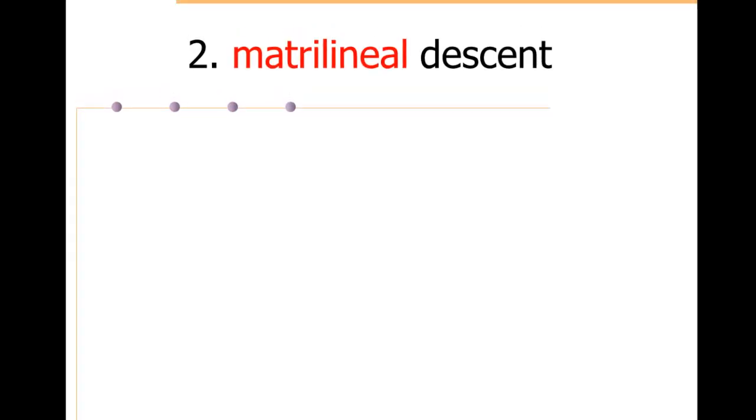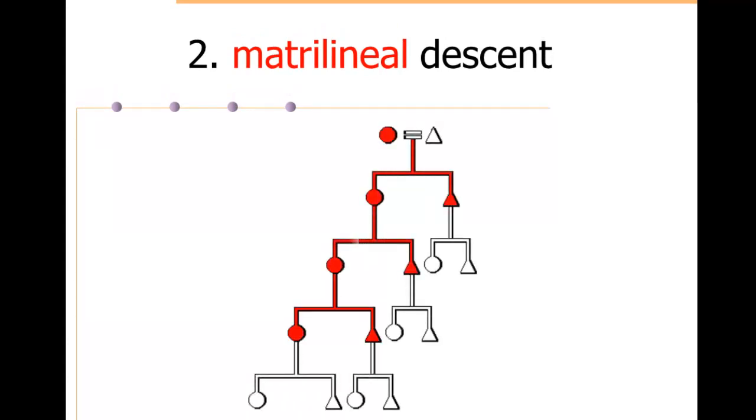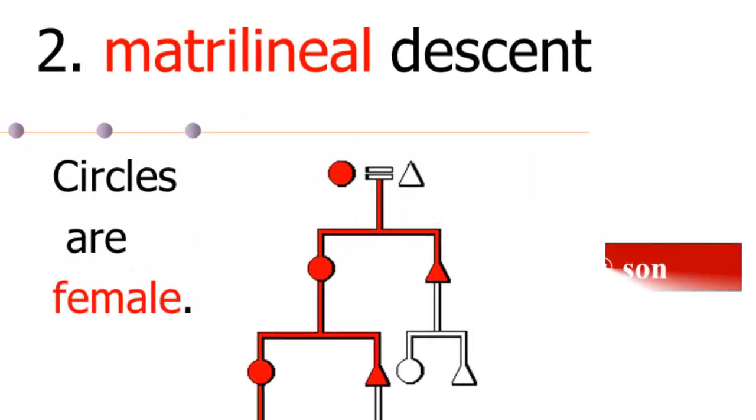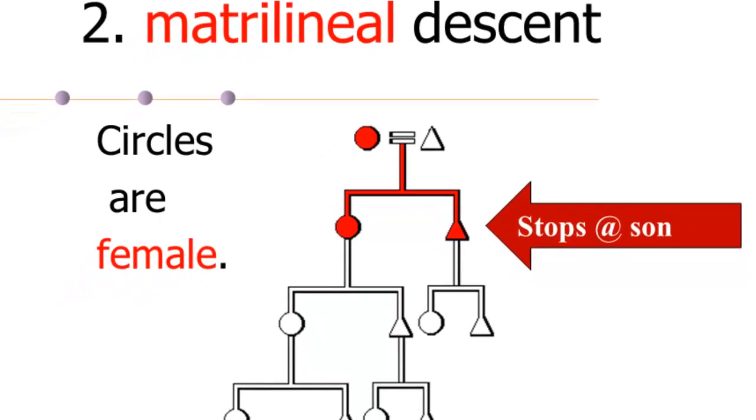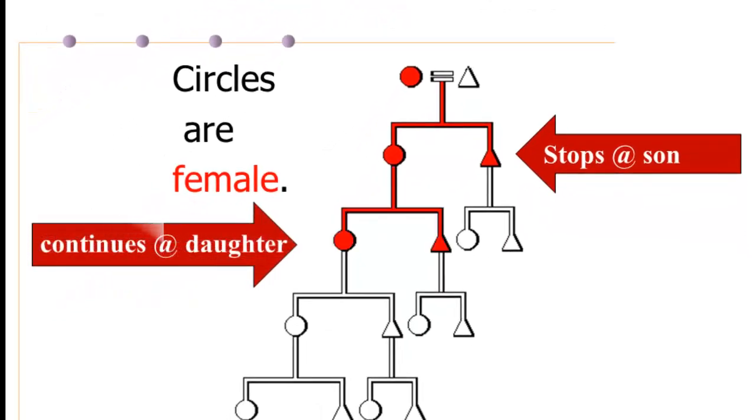Matrilineal descent can help us look at this again. So matrilineal descent formally is just the reverse of patrilineal descent. The circles are female, and in this case, whenever matrilineal descent reaches a son, it stops with him, whereas whenever matrilineal descent reaches a daughter, it flows through her and continues.